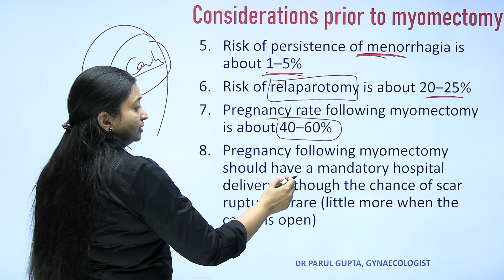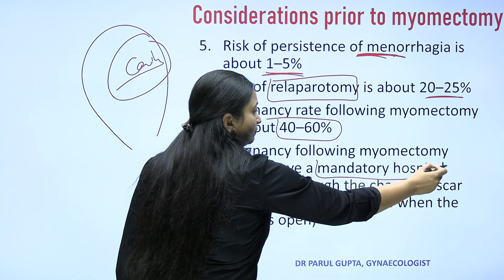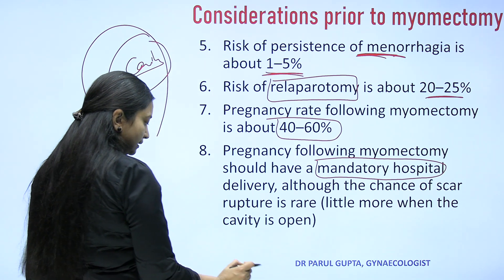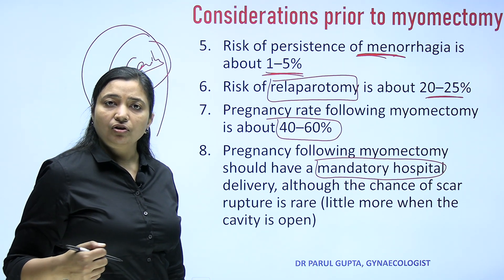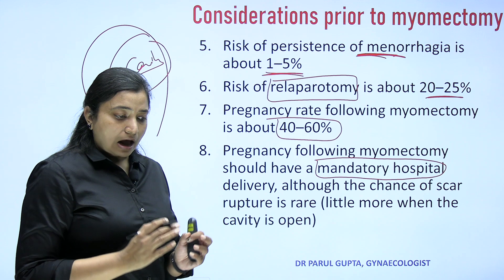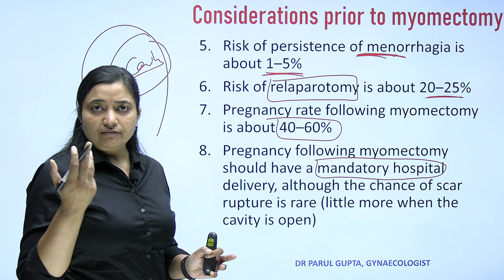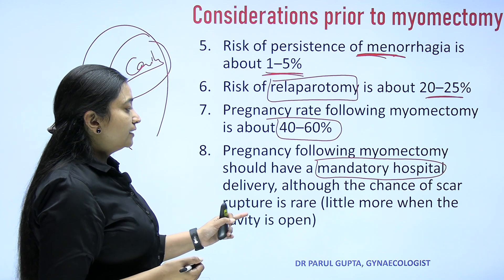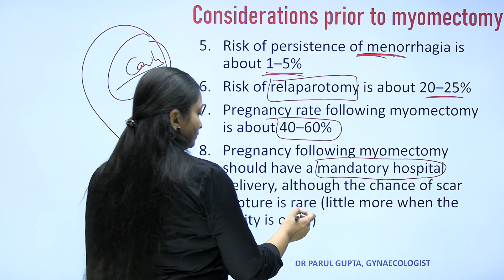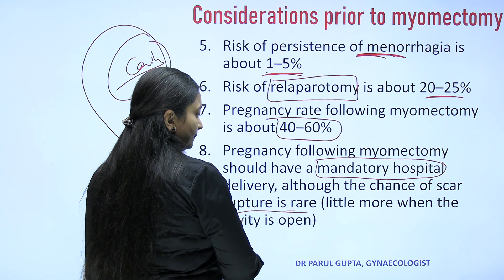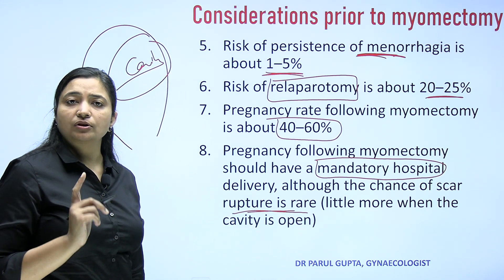Pregnancy following myomectomy should have a mandatory hospital delivery, because the uterus becomes scarred with sutures on the myometrium. How the uterus will tolerate labor pains remains to be seen. Although the chance of scar rupture is rare, there are chances of scar rupture during labor.